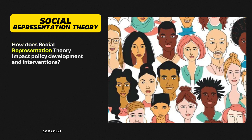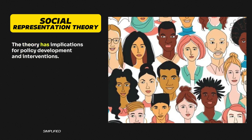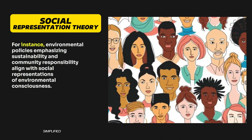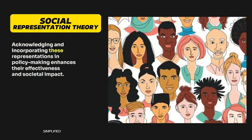Question 10: How does Social Representation Theory impact policy development and interventions? The theory has implications for policy development and interventions. Policies that align with existing social representations are more likely to be accepted and adopted by the public. For instance, environmental policies emphasizing sustainability and community responsibility align with social representations of environmental consciousness. Acknowledging and incorporating these representations in policy-making enhances their effectiveness and societal impact.